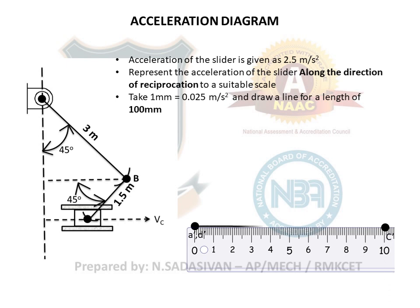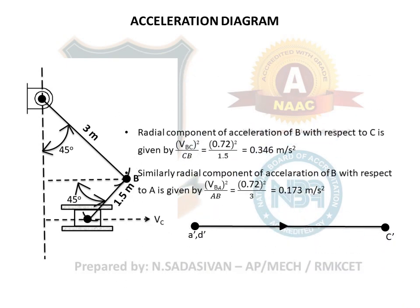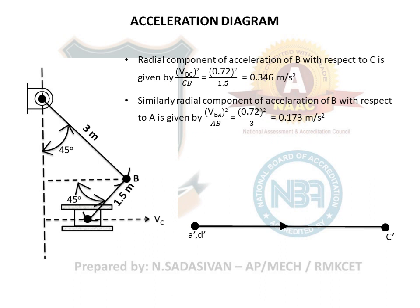Now for the two links, we know only the radial components. The radial component is given by velocity squared divided by length of the link. For link BC: 0.72 squared divided by 1.5 gives 0.346 m/s². For link AB: 0.72 squared divided by 3 gives 0.173 m/s² - half the BC value since the length is twice as long. Remember: always do the acceleration diagram only after completing the velocity diagram, so that you know all velocities needed to determine the radial components. Radial components always act along the link towards the center of rotation.